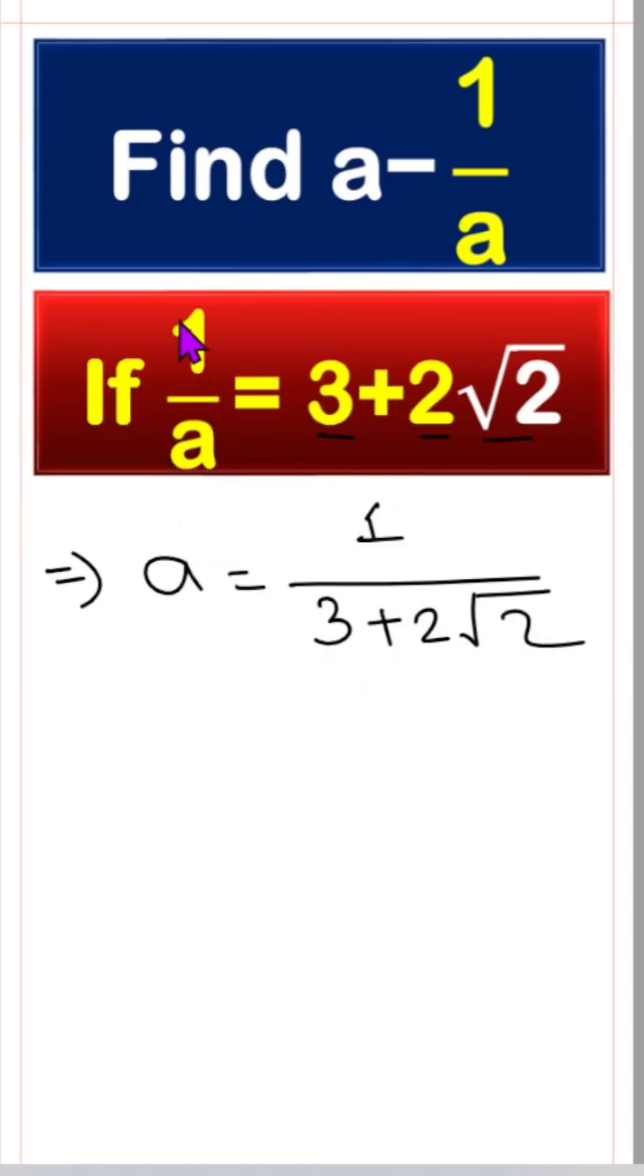This means the fraction will be flipped. So 1/a becomes a, and 3 plus 2 root 2 becomes 1 over 3 plus 2 root 2. But this kind of fraction we will not keep. We want a solid thing. It means in the denominator we will not use any root sign.